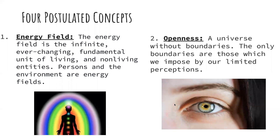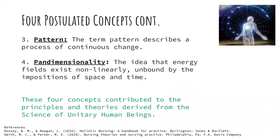My name is Jacob Wells and I'm going to be talking more about Martha Rogers' Science of Unitary Human Beings. In developing this theory, Martha Rogers postulated four separate concepts. The first is the energy field, which describes the fundamental unit of living and non-living entities — people and environments are both considered energy fields and they are both infinite and ever-changing. The second concept is openness, which describes the universe without boundaries; the only boundaries that exist are the ones we as energy fields impose upon it. The third concept is pattern, which describes the process of continuous change. And the fourth concept, as previously mentioned, is pandimensionality, which describes the energy fields existing in a non-linear format. These four concepts contribute to the principles further derived from the science of unitary human beings.